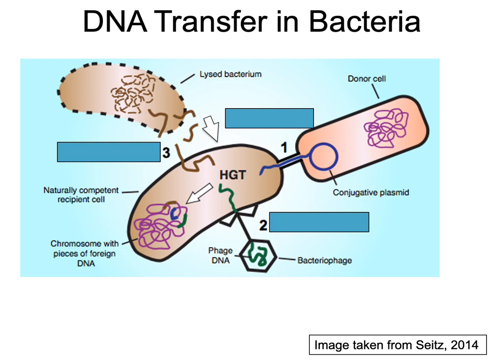Transformation is one of three processes by which exogenous genetic material may be introduced into a bacterial cell. The first one is conjugation, which is the process of transferring genetic material between two bacterial cells in direct contact. The second one is transduction, which is the injection of foreign DNA by a bacteriophage virus into the host bacteria, and the third one is transformation, which is what we will be learning.